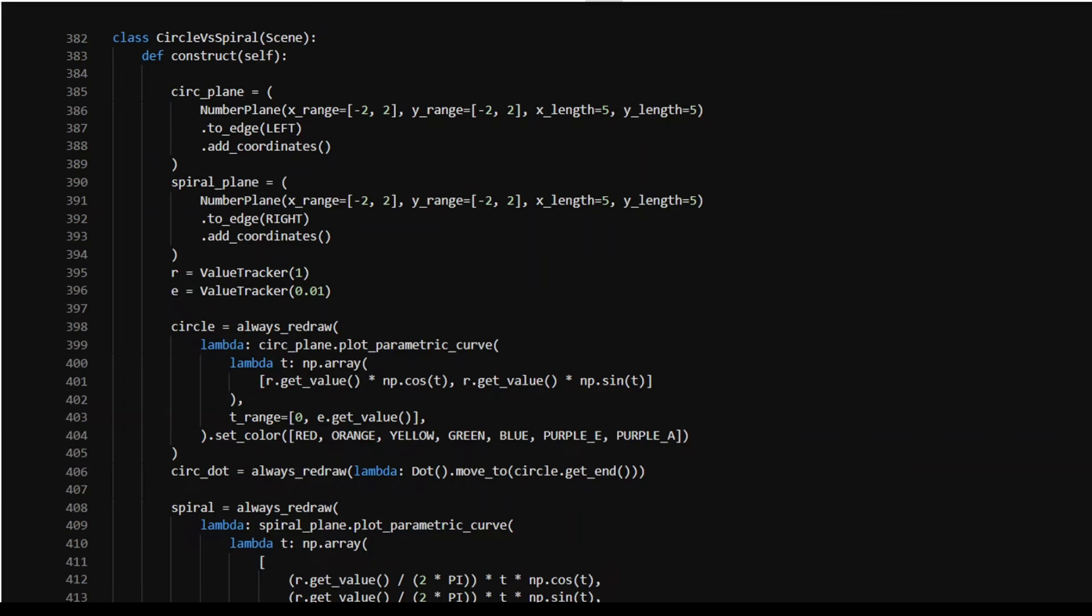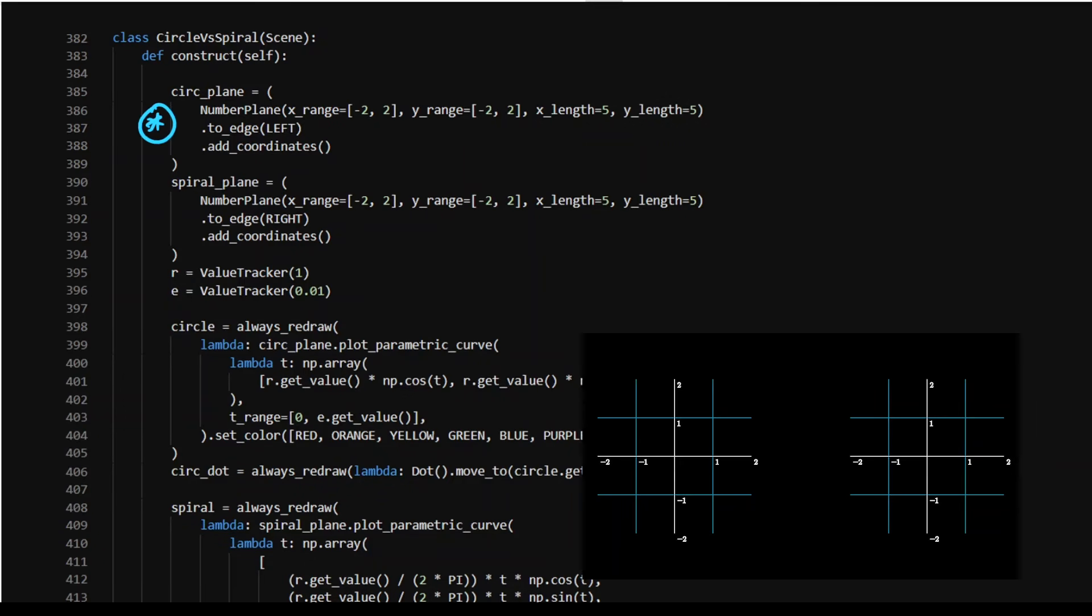As we saw, there was a circle plane that was defined, that's just the number plane for the circle. And there was a spiral plane. Again, it's just a number plane.